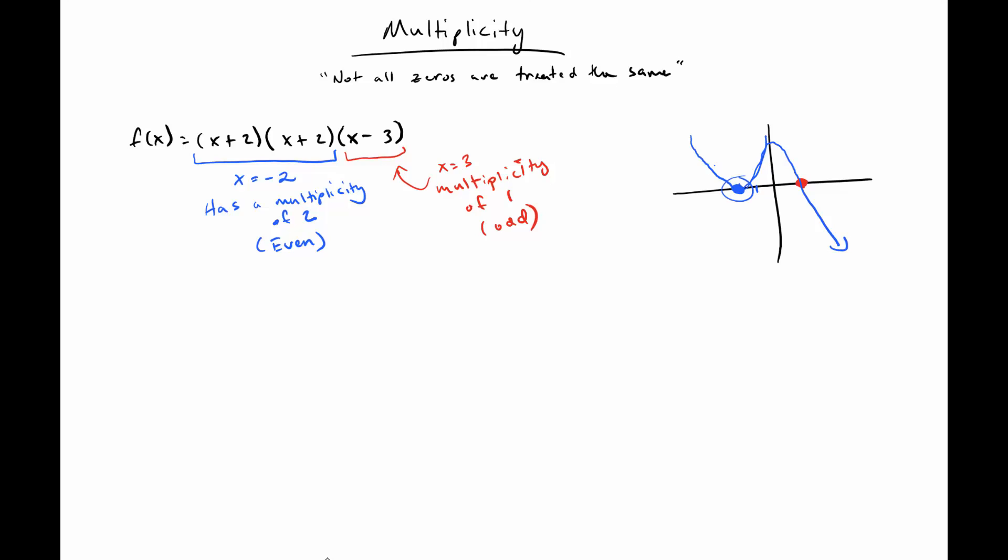So just kind of summarizing there, an even multiplicity is going to bounce is the way I usually describe it. And an odd multiplicity is going to go through.